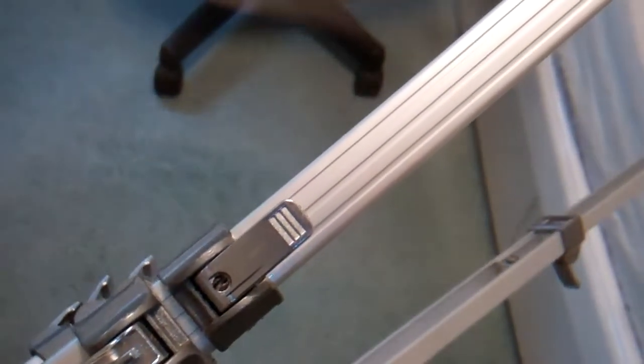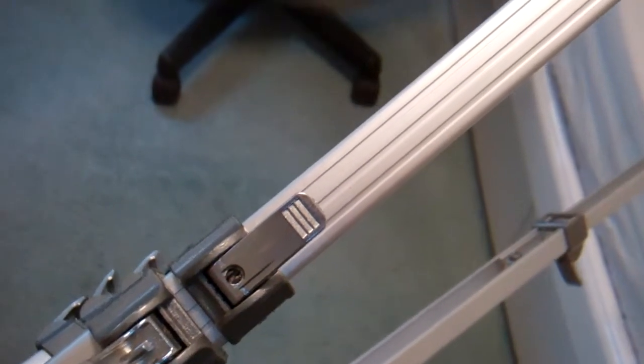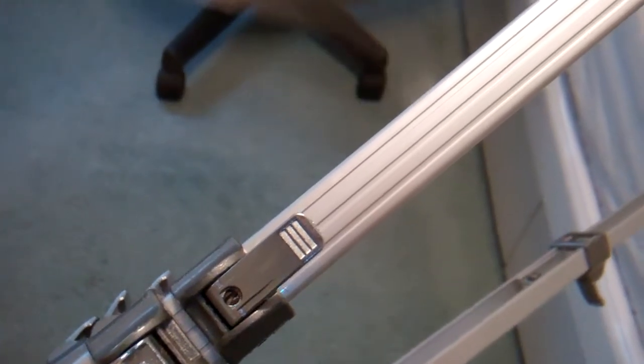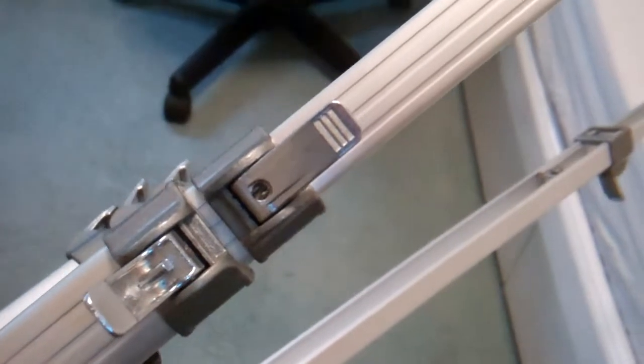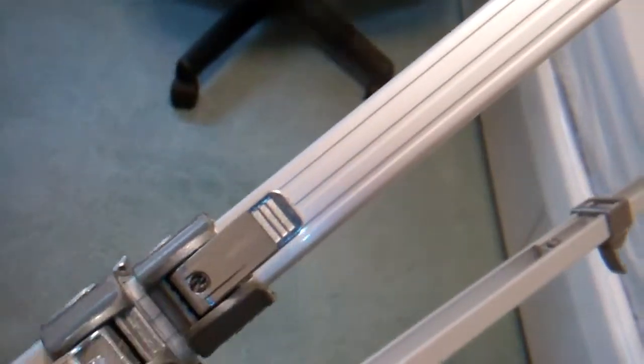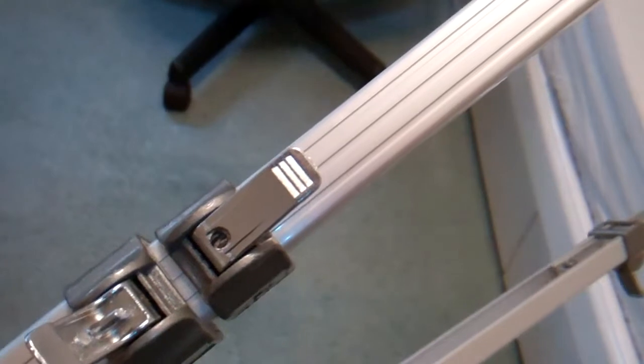There's a set screw that you can tighten to make the tension stronger, but this set screw is difficult to turn. Most of the time when you turn it, the head would strip and then you're not able to tighten it.